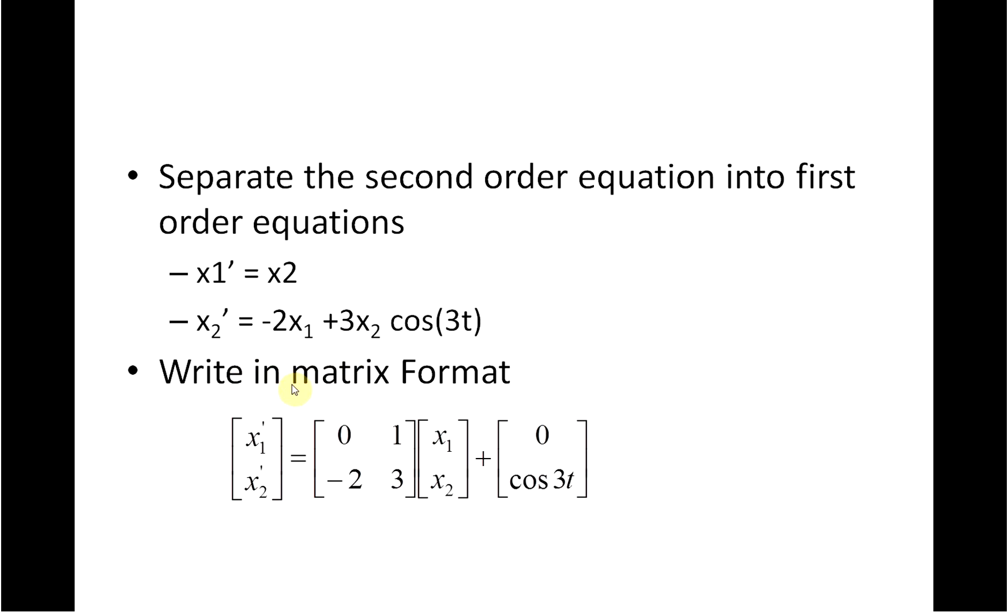And here, minus 2x1 plus 3x2 plus cos 3t gives me x2. OK.